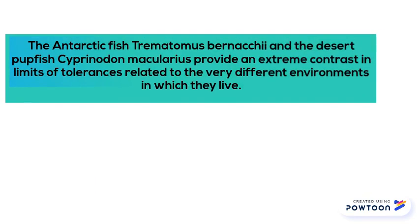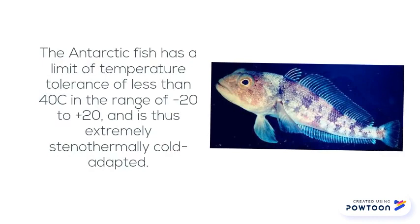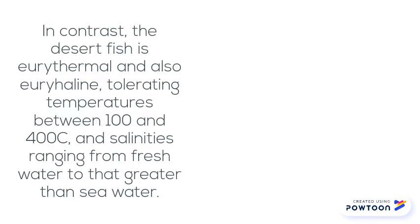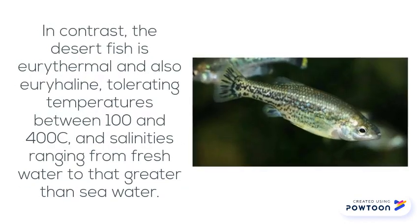The Antarctic fish Trematomus bernacchii and the desert pupfish Cyprinodon macularius provide an extreme contrast in limits of tolerances related to the very different environments in which they live. The Antarctic fish has a limit of temperature tolerance of less than 4°C, in the range of minus 2 to plus 2, and is thus extremely stenothermal and cold adapted. In contrast, the desert fish is eurythermal and also euryhaline, tolerating temperatures between 10 and 40°C, and salinities ranging from fresh water to greater than seawater.